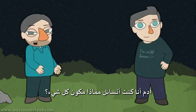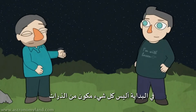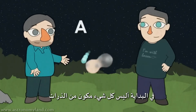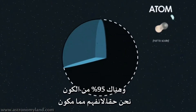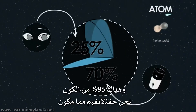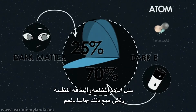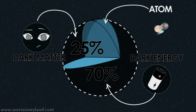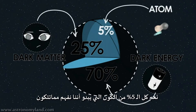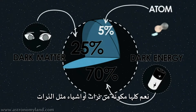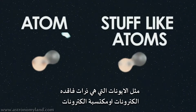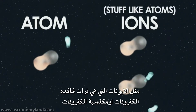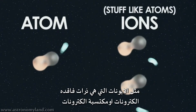Adam, I was wondering what everything's made of. So first of all, isn't everything made of atoms? Yeah, all the stuff around us is made of atoms. There's the 95% of the universe where we don't really understand what it's made of - dark matter and dark energy. But putting that aside, the 5% of the universe where we do understand what it's made of, yeah, it's all made of atoms, or stuff like atoms - ions, which are atoms with missing electrons or extra electrons.